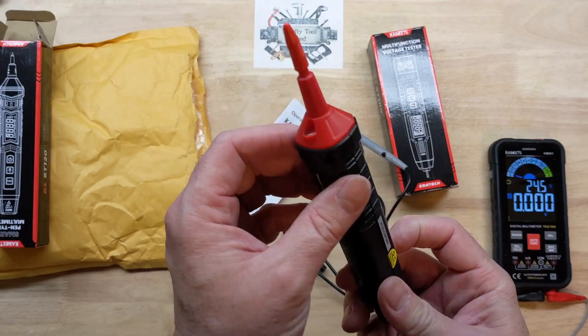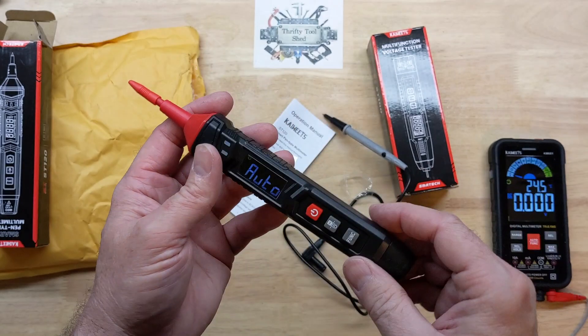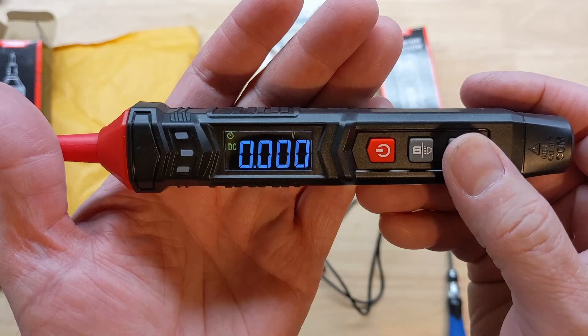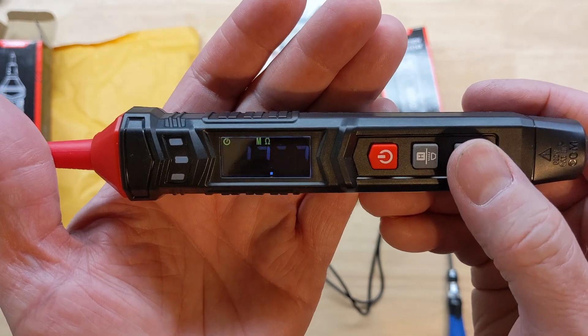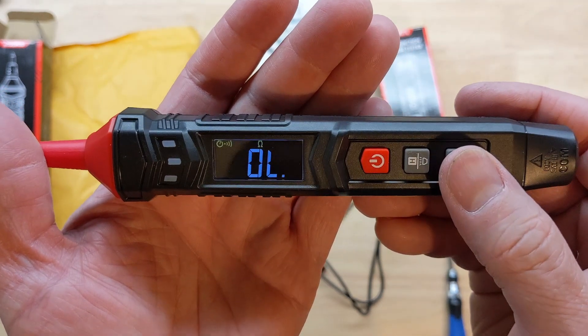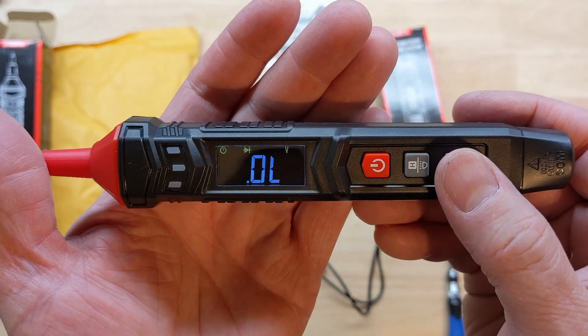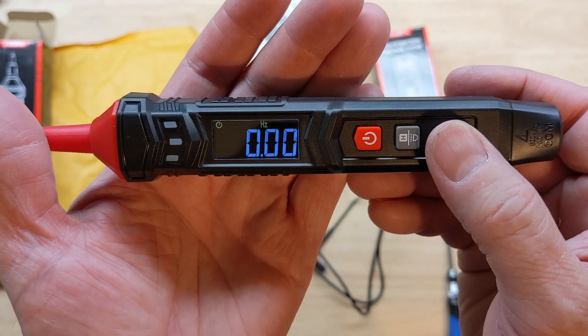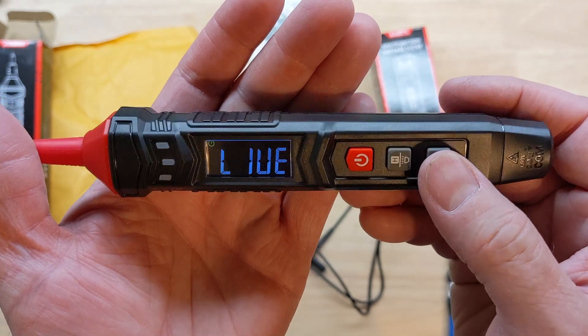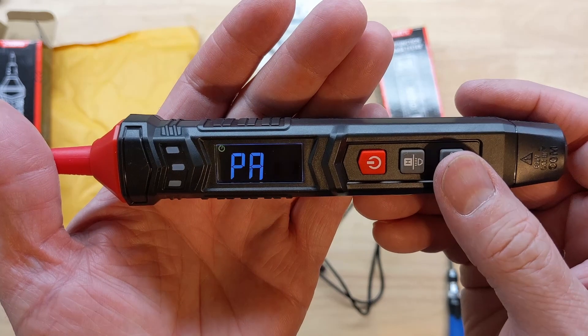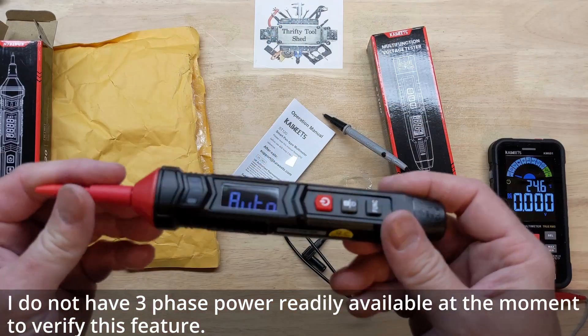We got a little LED light here right at the tip, so when you're testing stuff it's right there where you need it. We go to function here—we go from auto to DC volts, then we go to AC volts, ohms, continuity check, diode check, frequency, capacitance, live. We also have PA, which is going to be our phase rotation or phase sequence check, and back to auto.